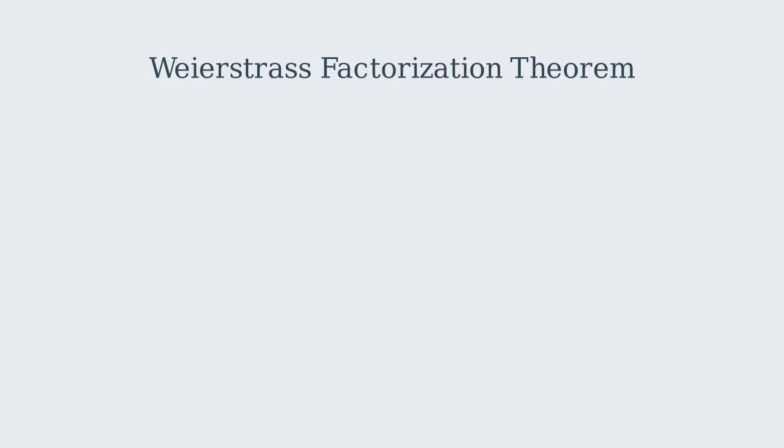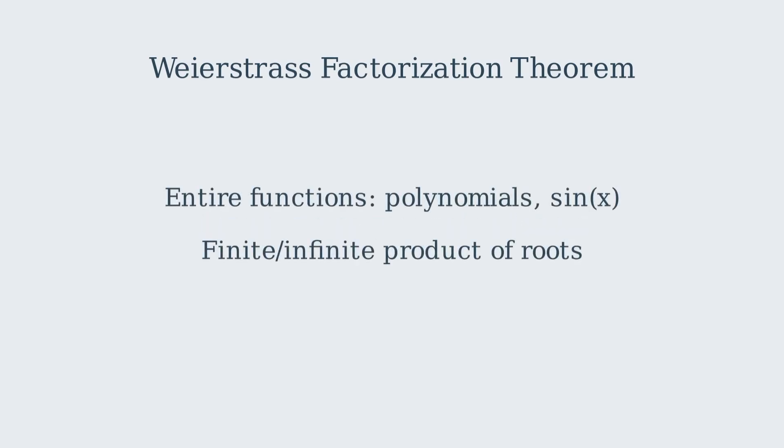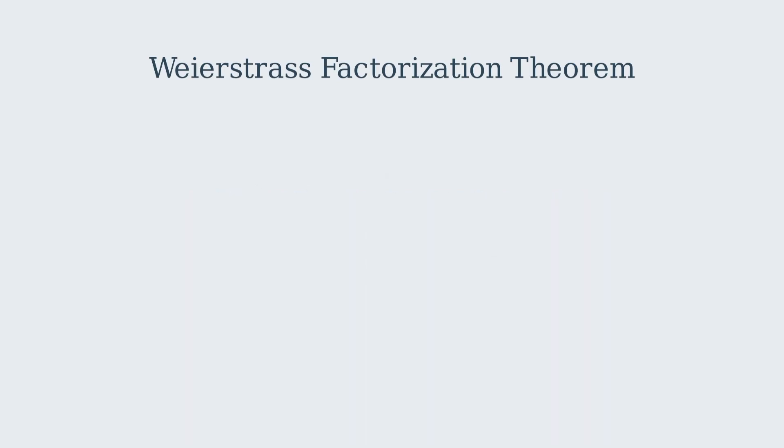This idea of turning equations into products of their roots is part of something bigger called the Weierstrass factorization theorem. It says any entire function, like a polynomial or even the sine function, can be written as a finite or infinite product of its roots. For example, the sine function has roots at n times pi, so Euler wrote it as an infinite product.